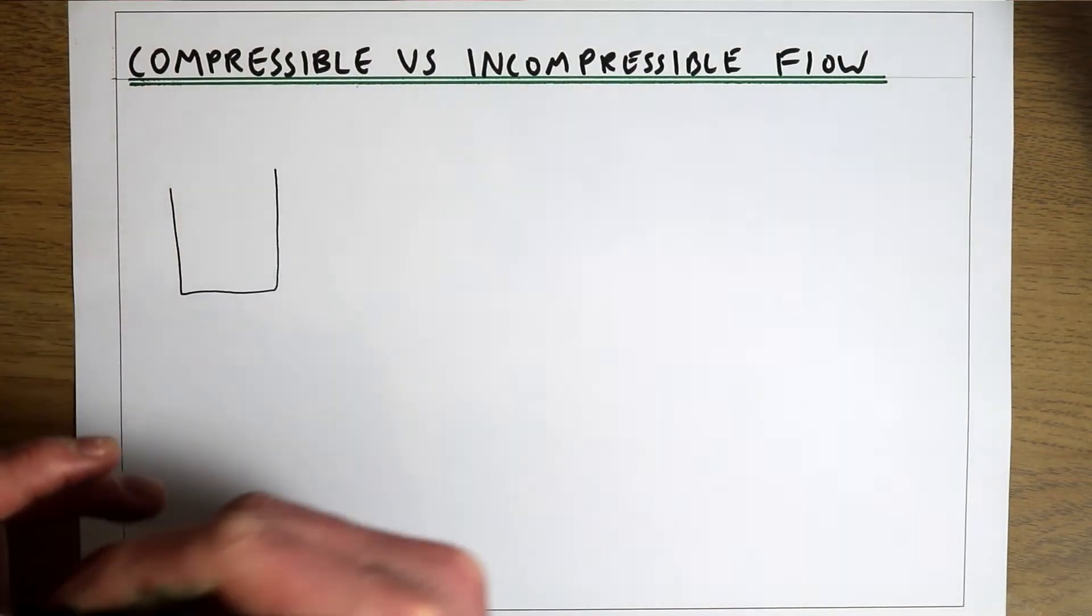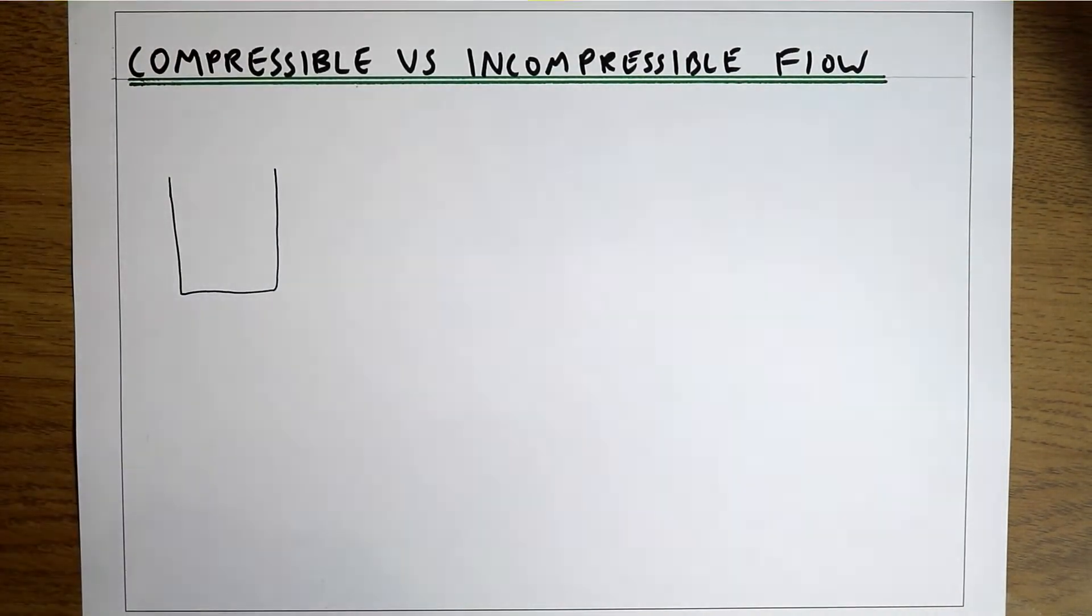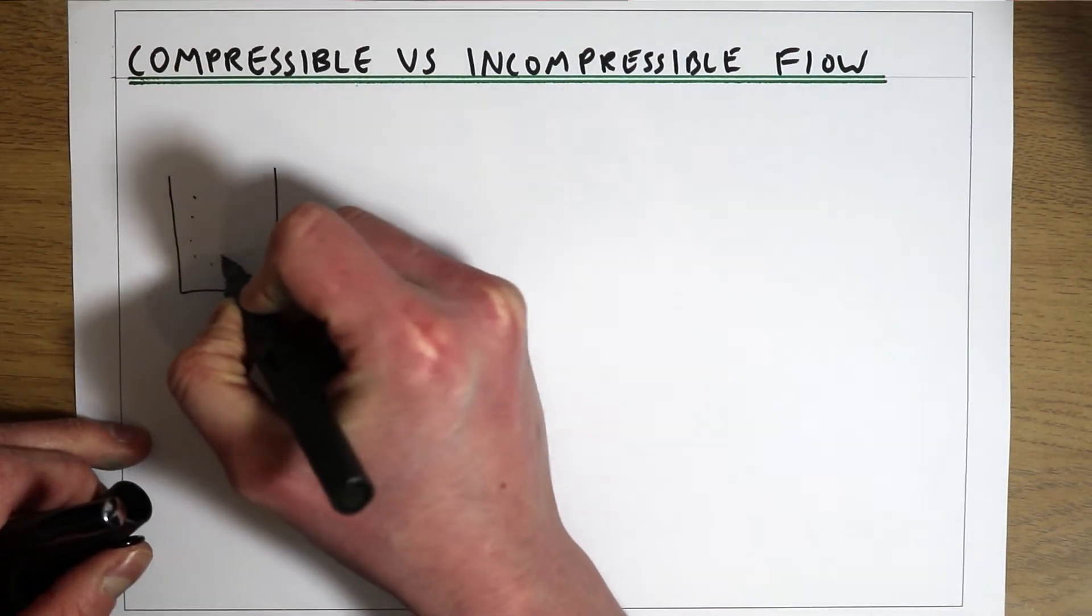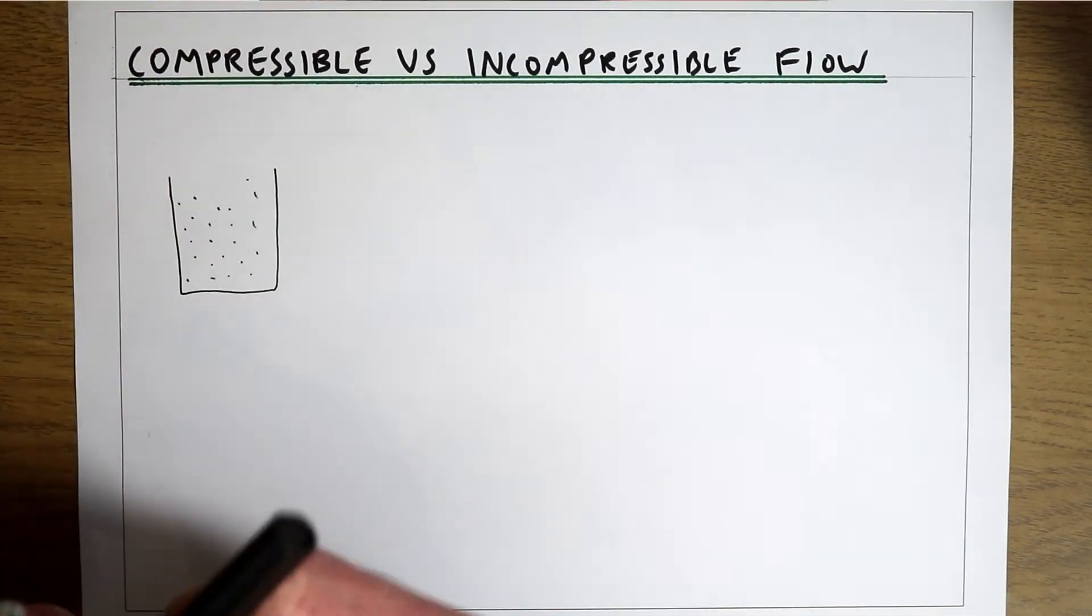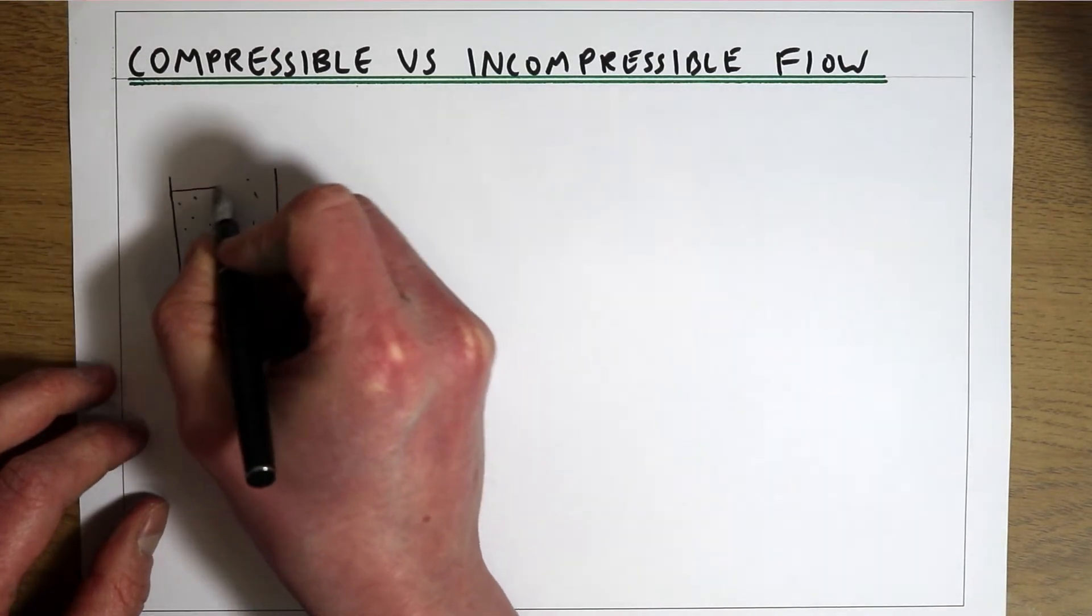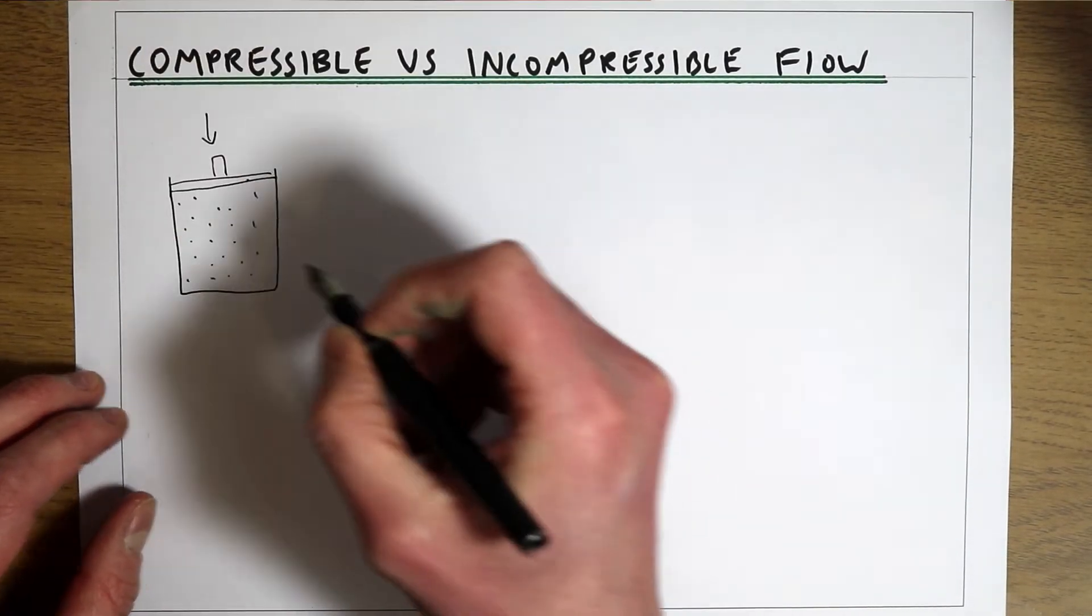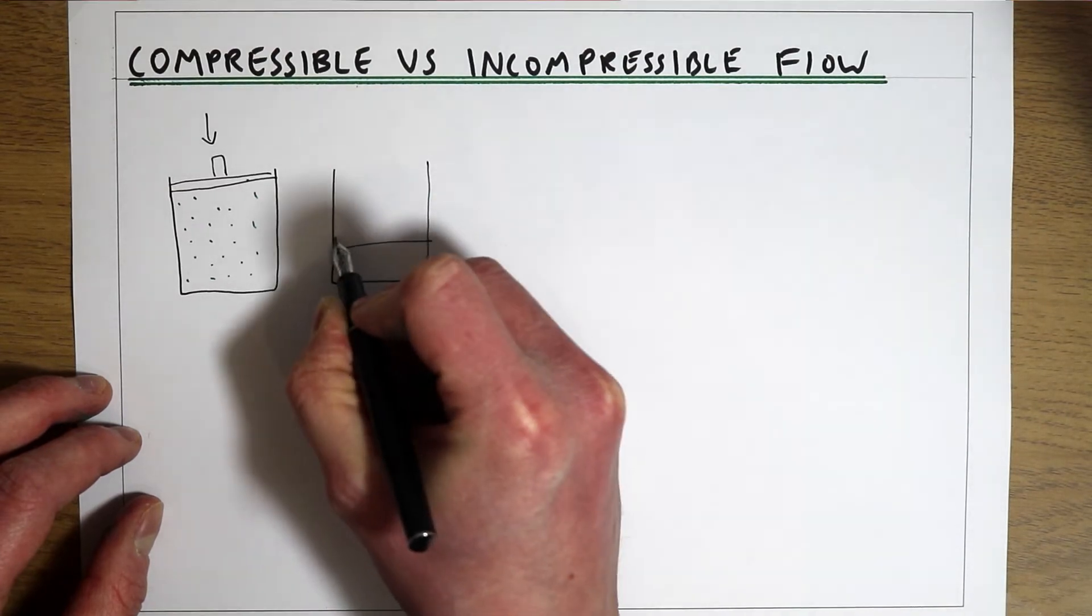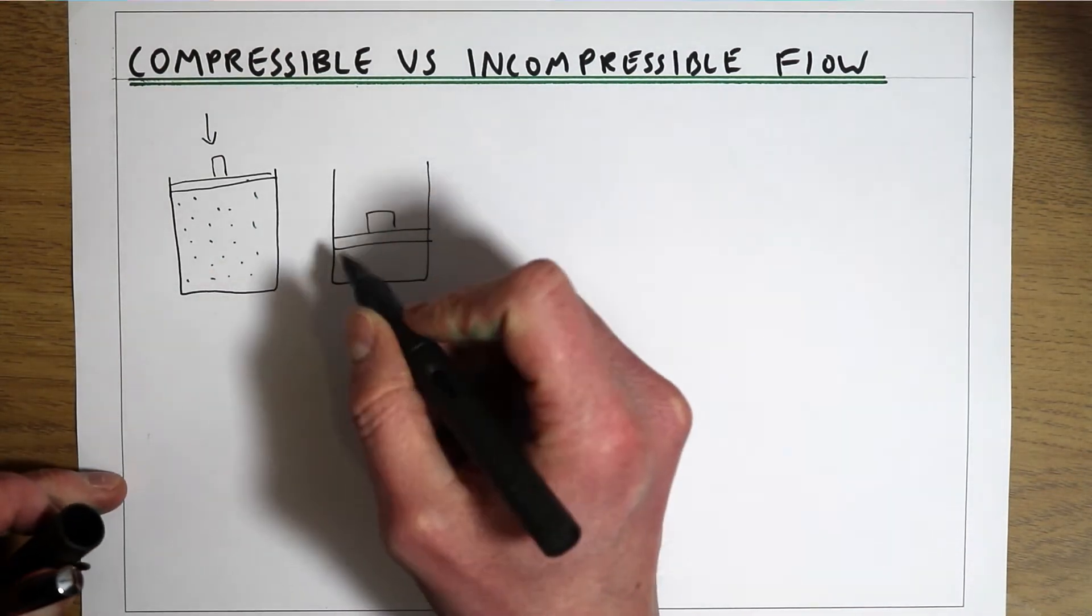If we've got a compressible fluid, then what that means is we've probably got quite a lot of space between the molecules of that fluid. So if you think about a gas in a container, there's quite a lot of space between the molecules of that gas. So if we put a piston on top of that container and we try to push it down, what we could actually do is compress that fluid.